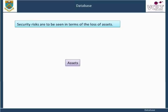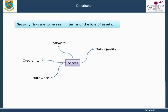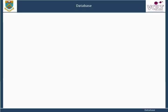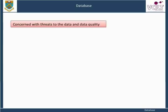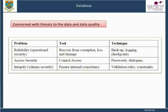These assets include hardware, software, data, data quality, credibility, availability, and business benefit. Here, we are primarily concerned with threats to the data and data quality, but of course a threat to one asset has consequential impact on other assets.